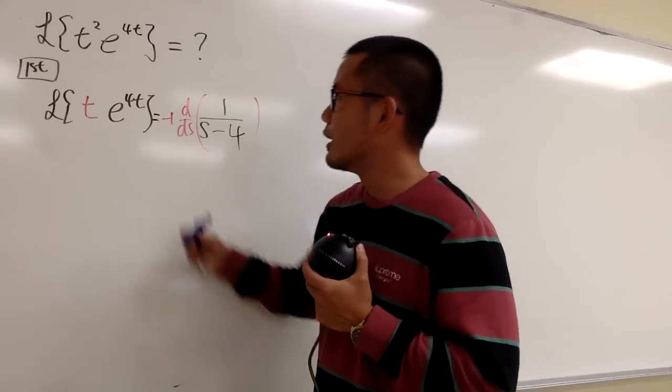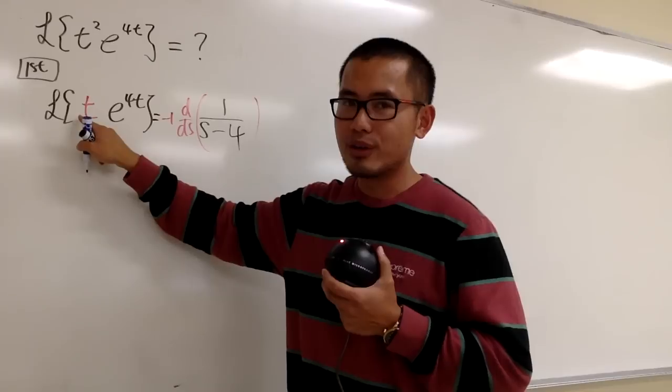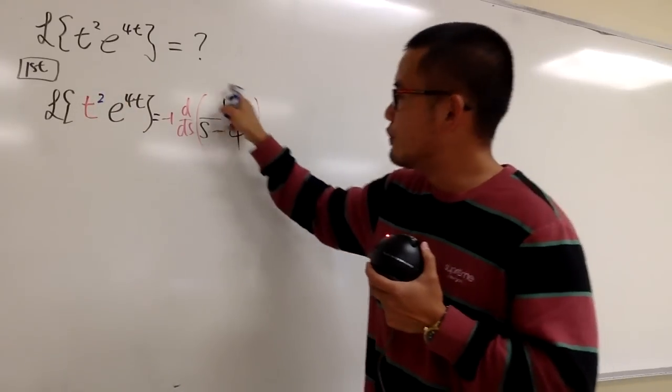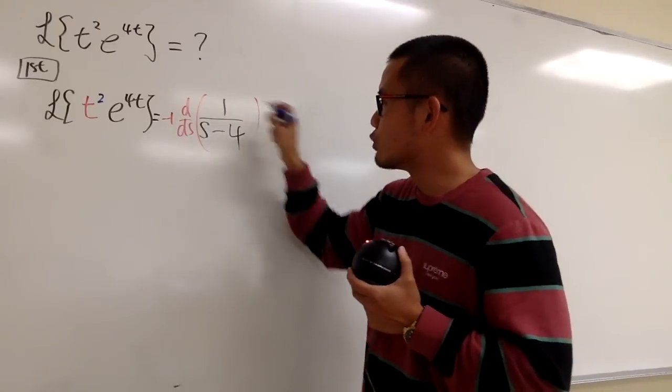But if you have t squared, that means you multiply by another t right here, namely t squared. You're just going to go ahead, differentiate this again. That means you have to get a second derivative right here, so let me put down d2 ds2.